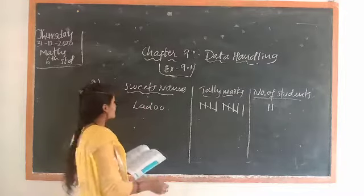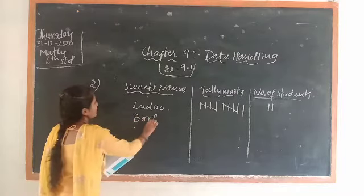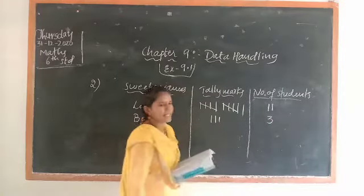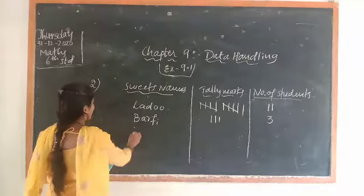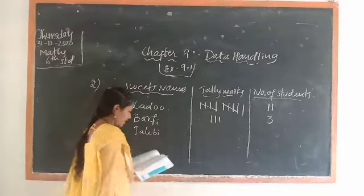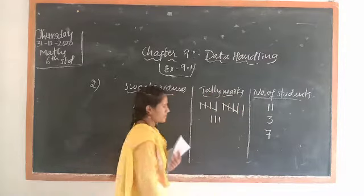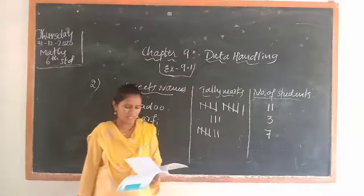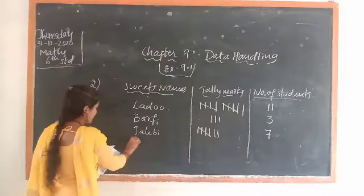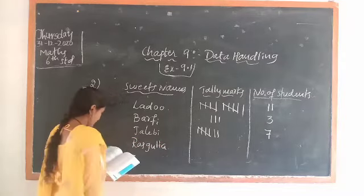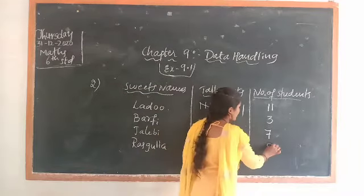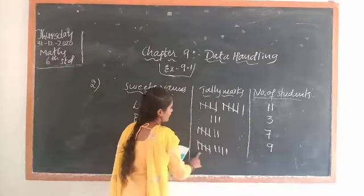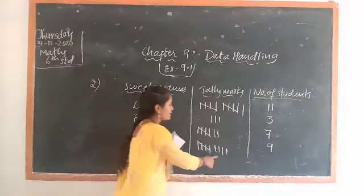Next, burfi — how many students like burfi? Count: burfi will be liked by 3 students, so write 3 tally lines. Next, jalebi — how many students like jalebi? Total 7 students. Write tally marks 1 through 7. Last sweet is rasgulla — how many students like it? Total 9 students. Write tally marks: 5, then 4 more lines.